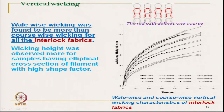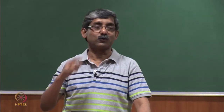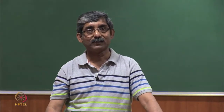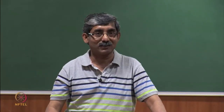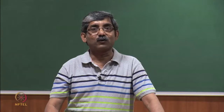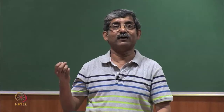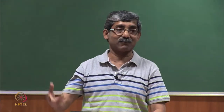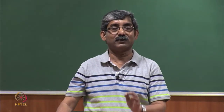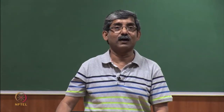Course-wise vertical wicking is slow, mainly because liquid has to travel a longer path when it travels in the course direction in interlock structure. But in the wale-wise direction it is actually faster. If we see the shape factor, elliptical fibre has a higher shape factor than others, and that is how elliptical fibre gives higher shape factor, so wicking height becomes high.